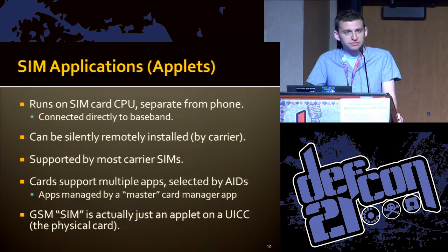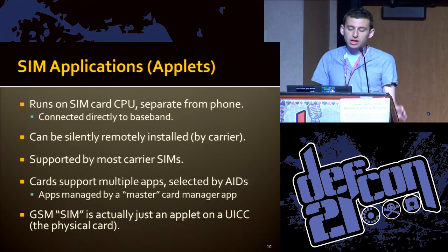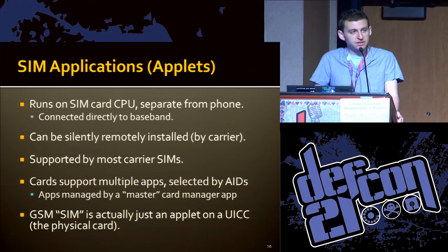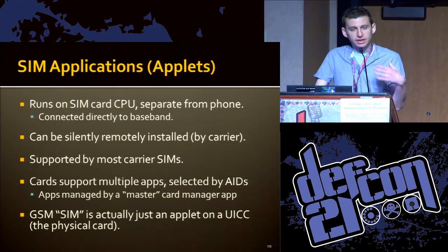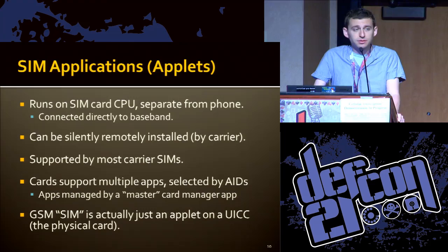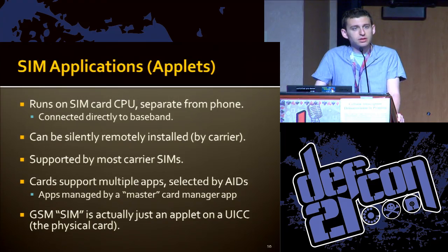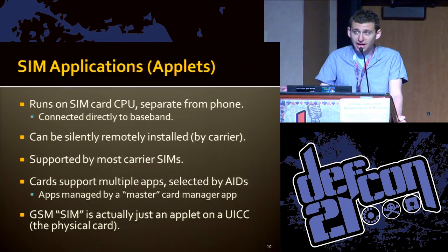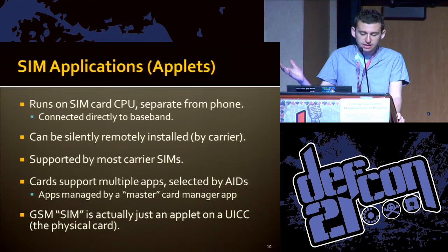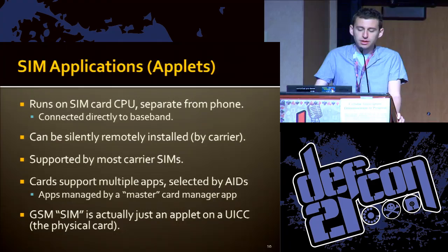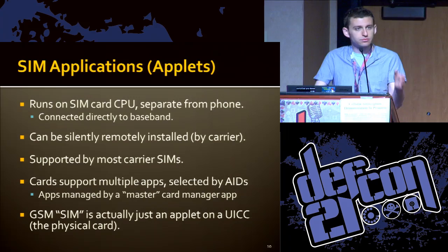SIM applications are often called applets. They run on the SIM card CPU completely separate from the phone — in many cases the phone doesn't even see what's going on. The SIM card has a direct connection to the baseband, often without going through the phone's operating system. SIM applications can be remotely installed by the carrier. Cards can have multiple apps running on them, managed by a card manager master application and referenced by an AID — applet ID. On a modern SIM card, the GSM support is basically just another app.